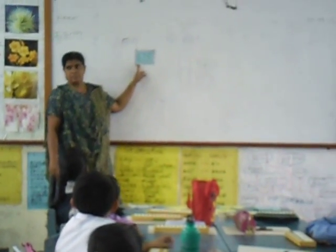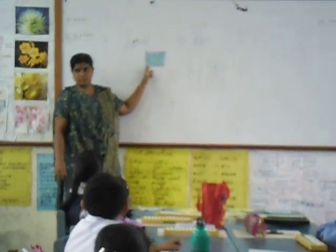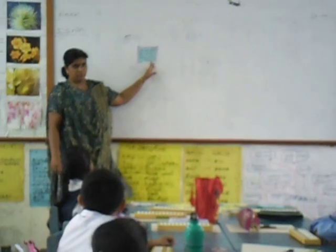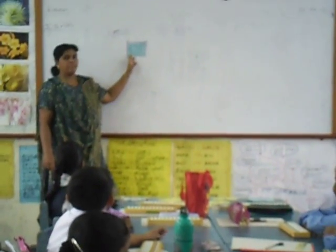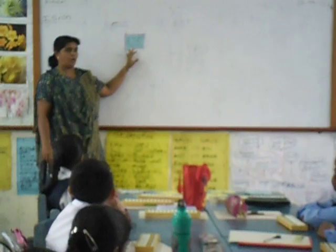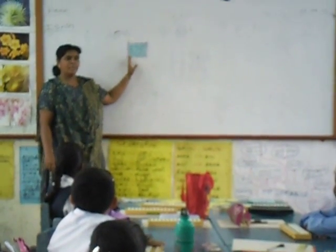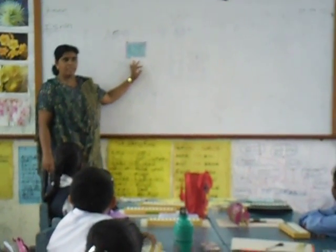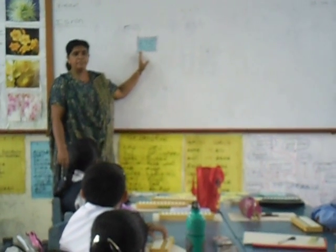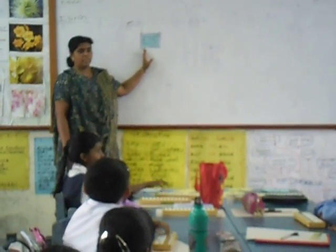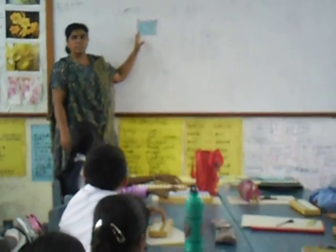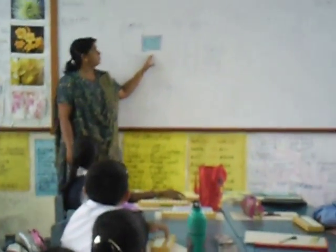Can y'all read this number? 875. Okay, 875. I want y'all to separate this number by using the place value — the digit value. First we will do the digit value.